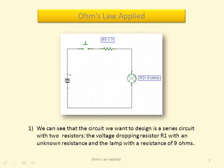We can see that the circuit we want to design is a series circuit with two resistors. The voltage dropping resistor with an unknown resistance and the lamp with a resistance of 9 ohms.